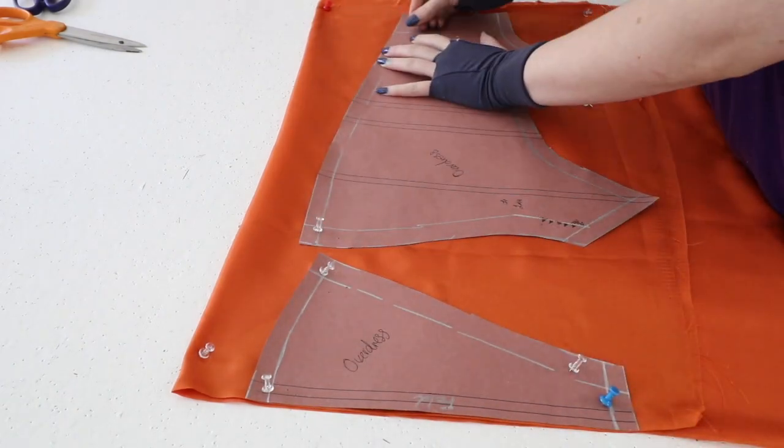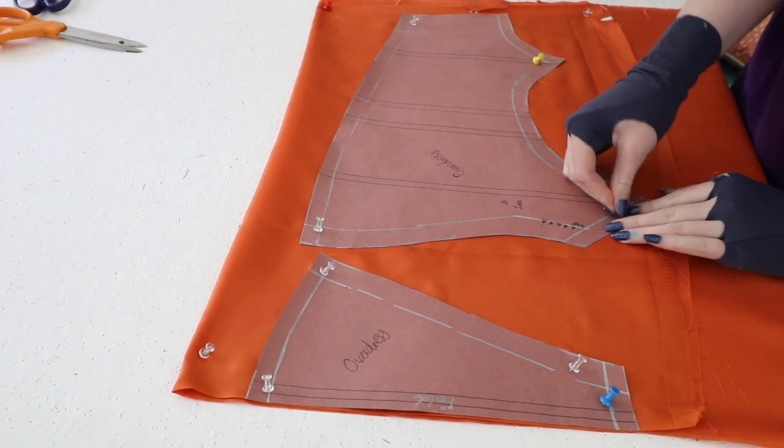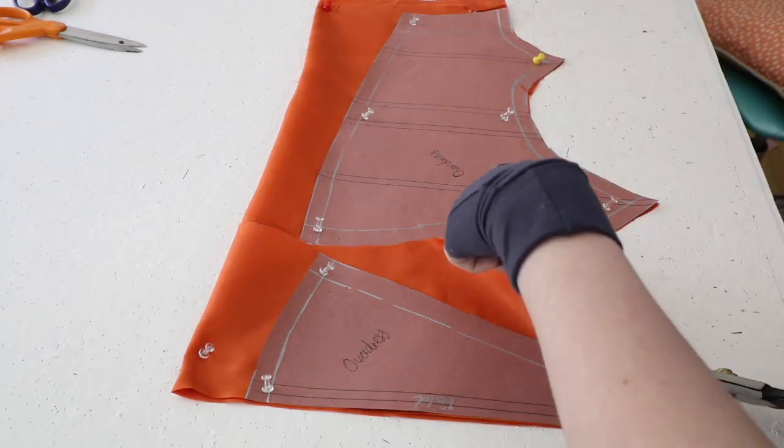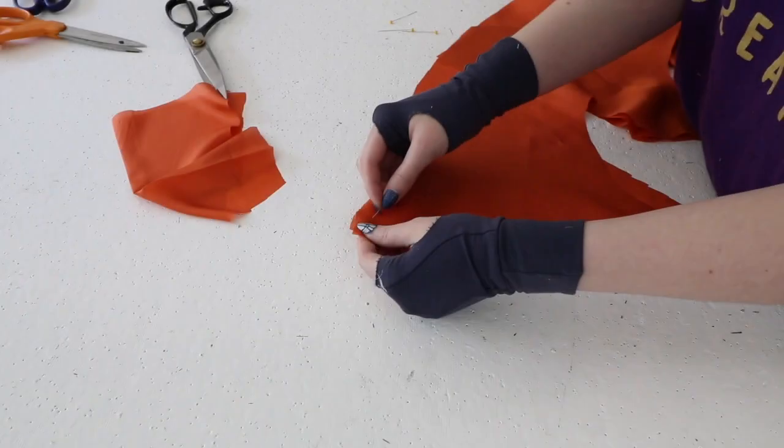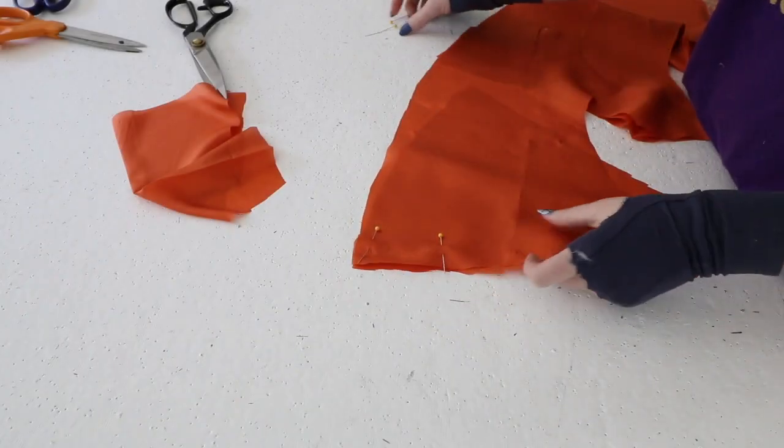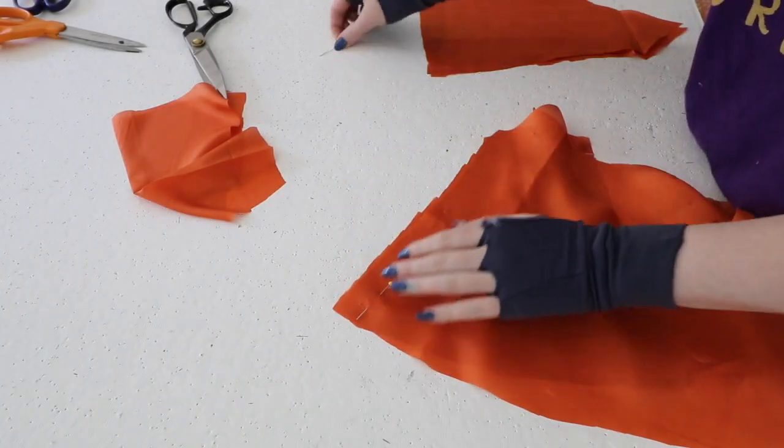I also cut the pattern out from china silk, which will be used for the top layer of fabric. I'll be using this for the lining too, so I cut it out twice. I pinned one set of the pieces together, then set them aside and refocused on the base layer.